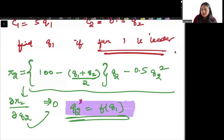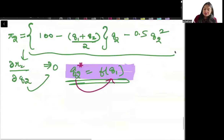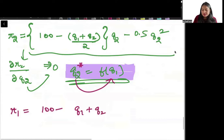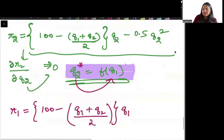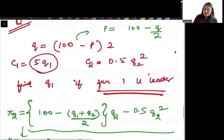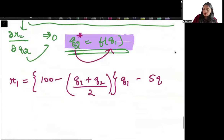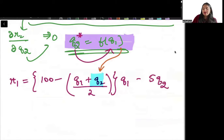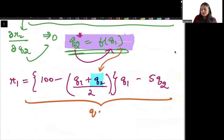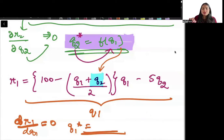Once you get Q₂ as a function of Q₁, substitute it into the profit function of firm 1 (which includes -5Q₁). Replace Q₂ with the expression obtained so the entire profit function is in terms of Q₁. Then differentiate with respect to Q₁, equate to 0, and get Q₁*.